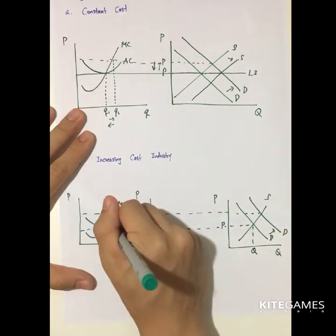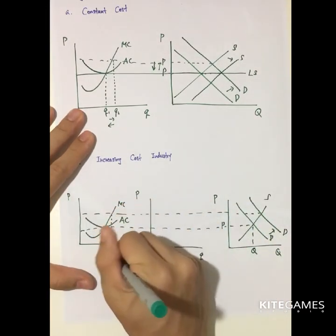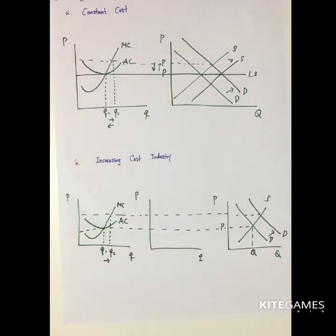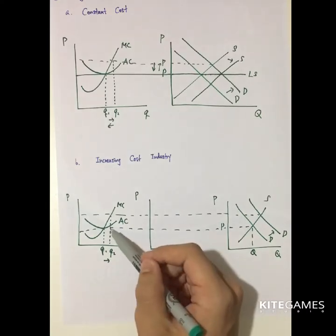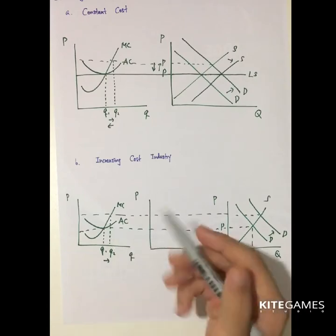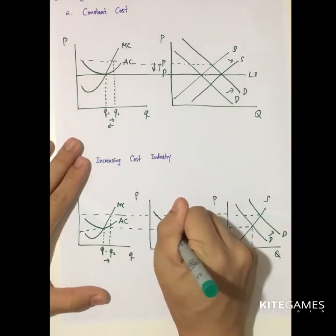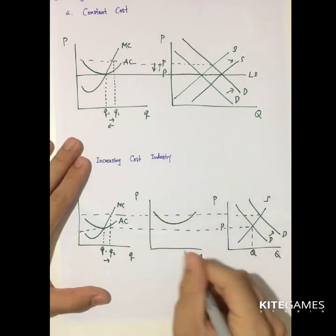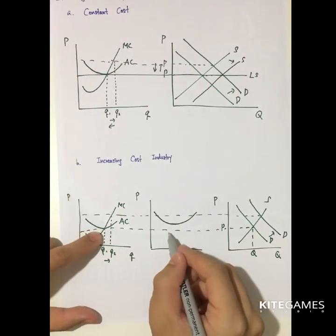If demand increases, the firms will experience a profit, similar to the previous case. Some newcomers will be attracted. But these newcomers are more inferior to the previous ones — they cannot produce at a cost similar to the original firms. They need to produce at a higher cost. As a result, the average cost may be above the original price.